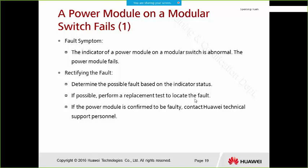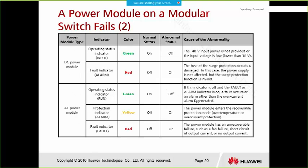When a power module on a modular switch fails — for example, an indicator of a power module is abnormal — to rectify the fault, determine the possible fault based on the indicator status. If possible, perform a replacement test to locate the fault. If the power module is confirmed to be faulty, contact Huawei. The DC and AC power modules have several indicators, and their meanings are shown here.